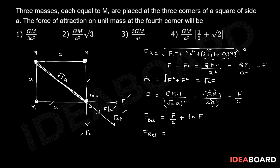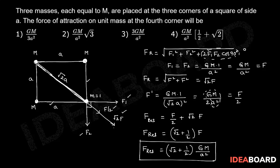Which is equal to root 2 plus 1 by 2 into F. Therefore F resultant is equal to root 2 plus 1 by 2 into F value GM by A square. So fourth option is the right option.